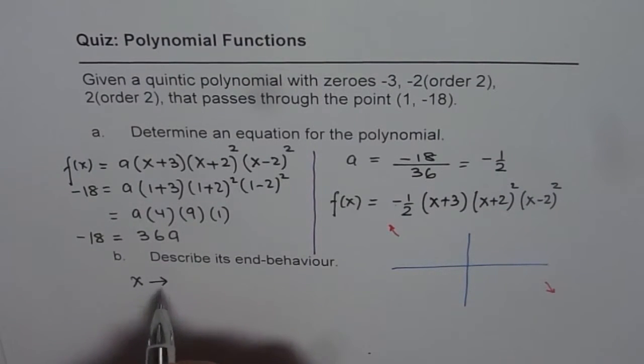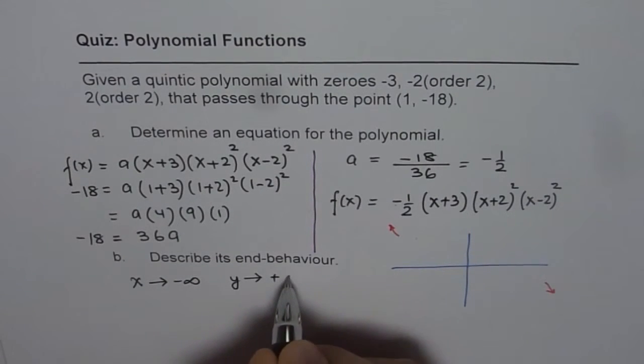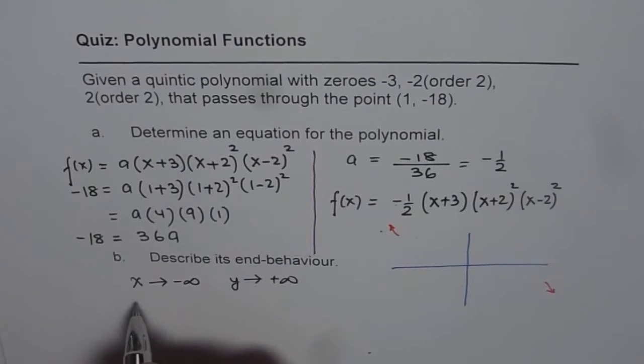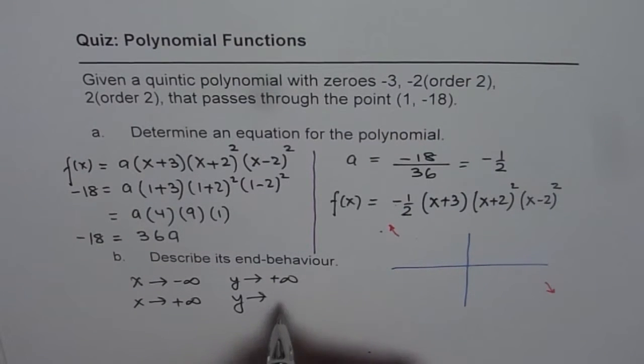And that is, as x approaches negative infinity, y approaches positive infinity. And as x approaches positive infinity, y approaches negative infinity. It is going unbound downwards. So that is how we can write down the end behavior.